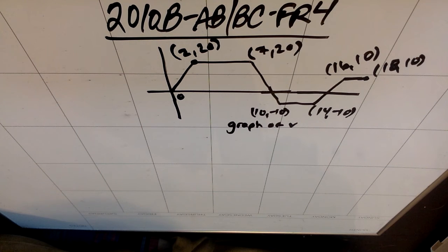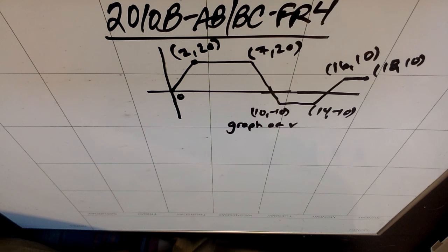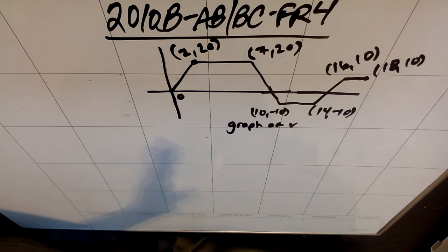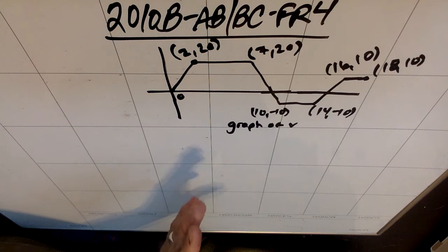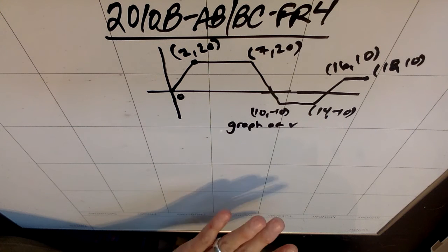This is 2010 Form B, A, B, B, C, free response 4 — the squirrel problem. A squirrel starts at building A at time t equals 0 and travels along a straight wire connected to building B. For time between 0 and 18, the squirrel's velocity is modeled by a piecewise function — terribly graphed by me, so please look at the actual AP paper.